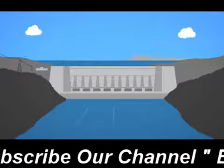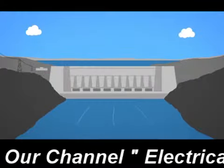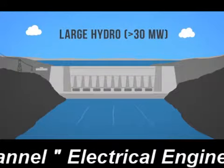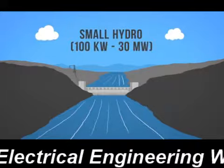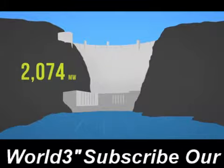There are various sizes of hydro plants that produce electricity: large hydro, greater than 30 megawatts; small hydro, 100 kilowatts to 30 megawatts; and micro hydro, less than 100 kilowatts. The fifth dam in the United States is a whopping 2,074 megawatts, which is enough to serve 1.3 million people.